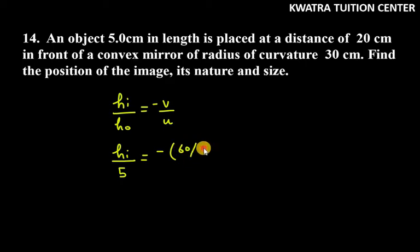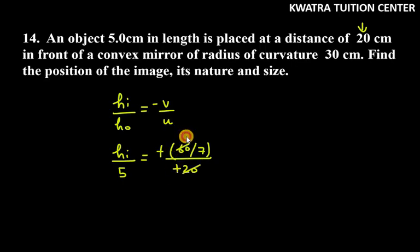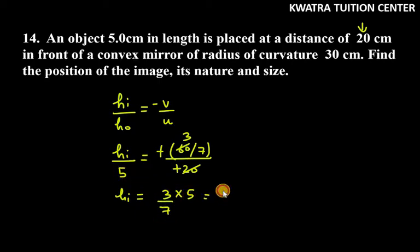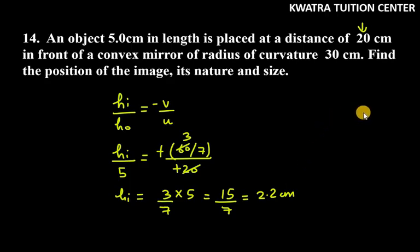Writing v as 60 over 7 and u as minus 20, the two negatives cancel. Simplifying, 20 and 60 cancel to give 3, so hi equals 3 over 7 multiplied by 5, which is 15 over 7, approximately 2.2 cm. So the size of the image is 2.2 cm. This is the answer for question number 14.